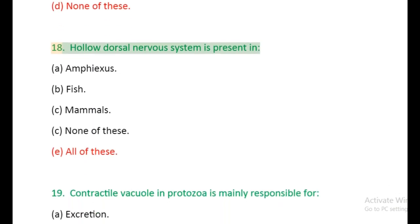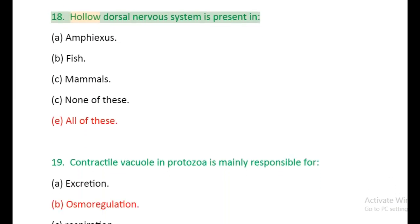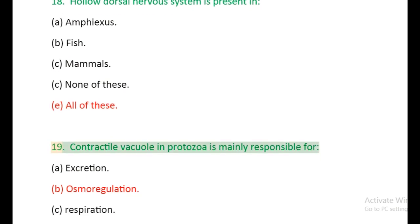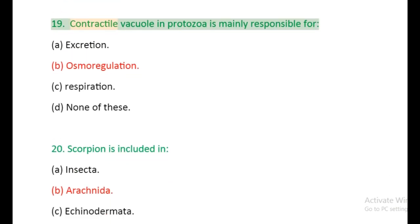Question 18: Hollow dorsal nervous system is present in: (a) Amphioxus, (b) Fish, (c) Mammals, (d) None of these, (e) All of these. Question 19: Contractile vacuole in protozoa is mainly responsible for: (a) Excretion, (b) Osmoregulation, (c) Respiration, (d) None of these.